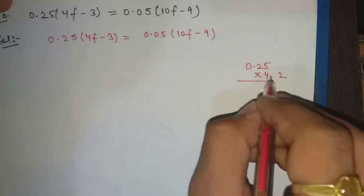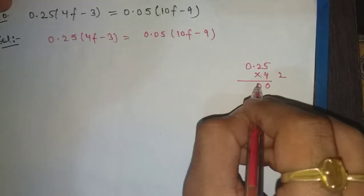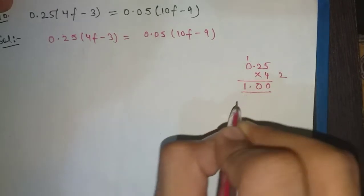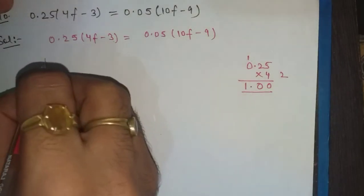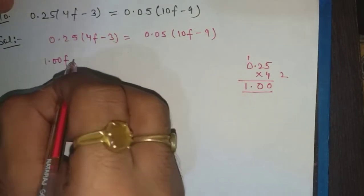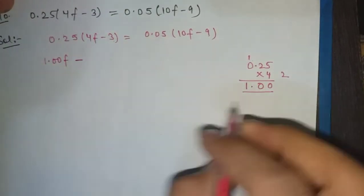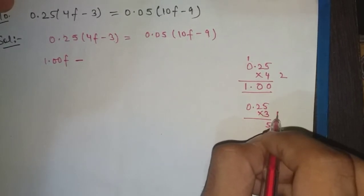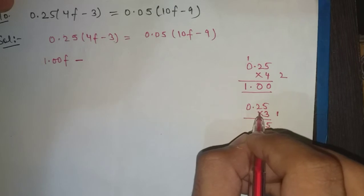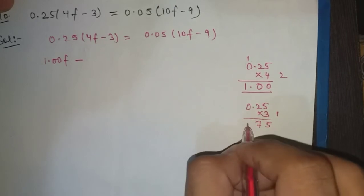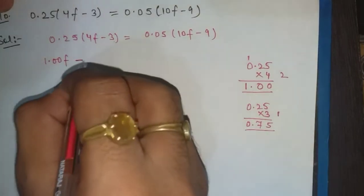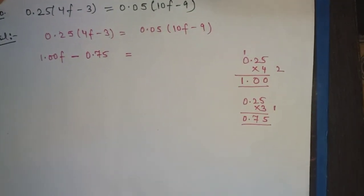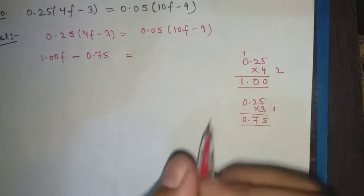0.25 times 4: 4 times 8 is 32, carry the 1, so 1.00. The answer is 1.00f minus... now 0.25 times 3: 3 times 5 is 15, carry 1, 3 times 2 is 6 plus 1 is 7, so 0.75.